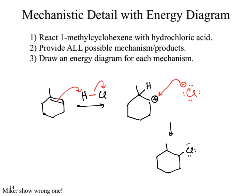In this case, I asked you to draw all possible mechanisms and products. There's a note at the bottom that I needed to show the wrong one, because in theory you would have drawn the correct one. So if we go through and look at our very first step, the alkene donates its electrons to a hydrogen. That hydrogen now needs to have electrons shared between it and a carbon. The question becomes, which carbon?